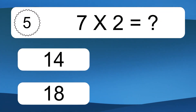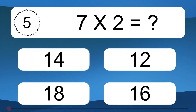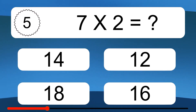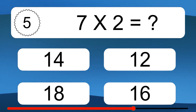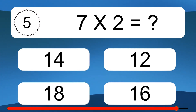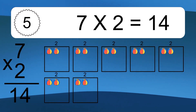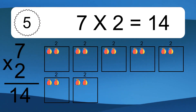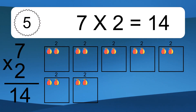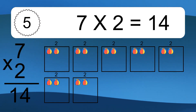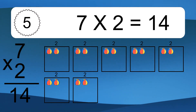7 times 2 equals what? 7 times 2 equals 14. We have 7 boxes, and each box has 2 colorful balls inside. If you count all the balls in all the boxes together, you will have 7 times 2 balls. This equals 14 balls.